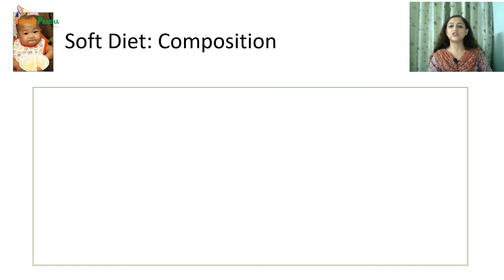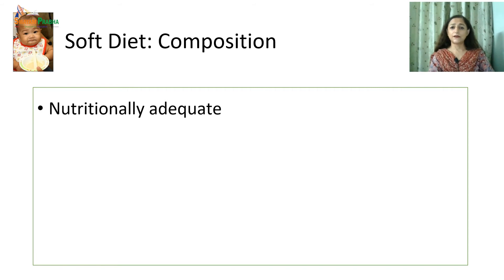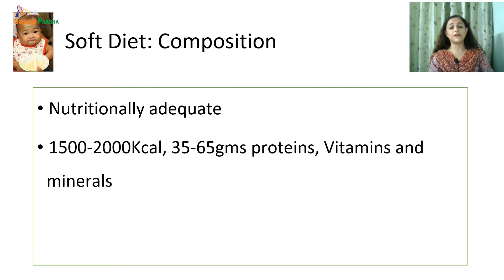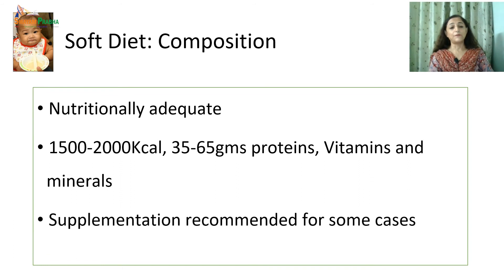The micro and macronutrients of the soft diet are planned on the basis of height, weight, gender, age, activity pattern, and type of disease. A carefully planned soft diet is nutritionally adequate and may provide anywhere between 1500 to 2000 kilocalories of energy and 35 to 65 grams of protein, along with vitamins and minerals. A properly planned soft diet can be continued for a longer period of time, though supplementation or in-between feedings may be recommended for patients unable to consume adequate amounts of food.